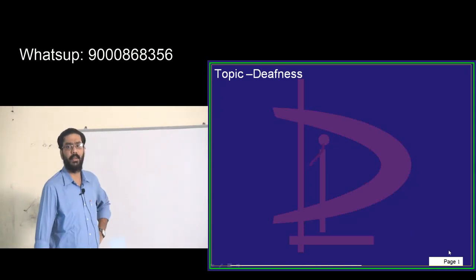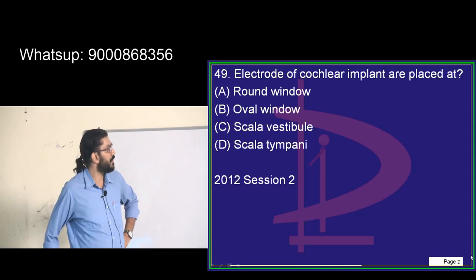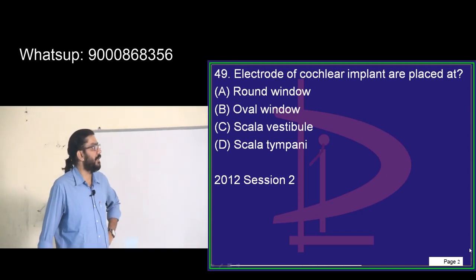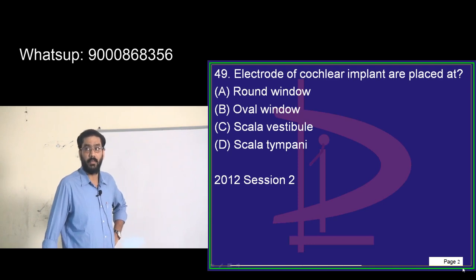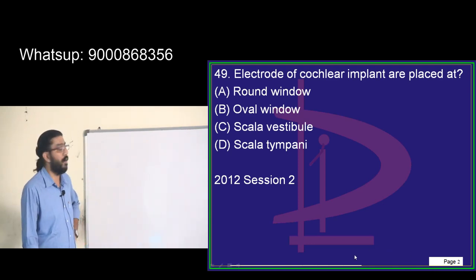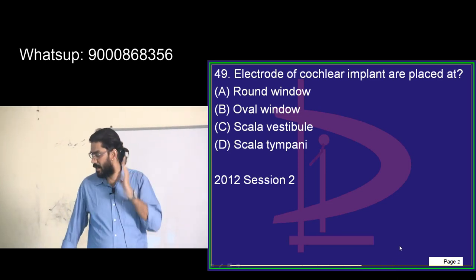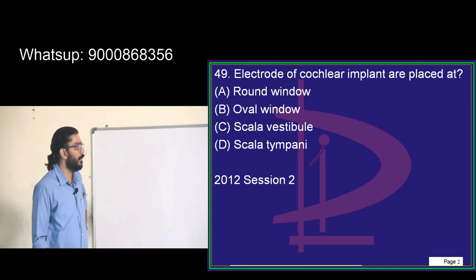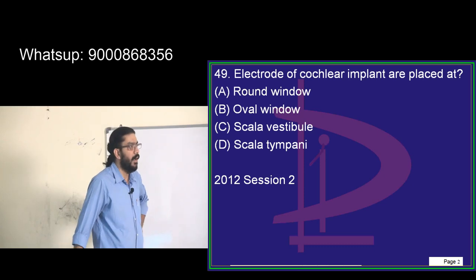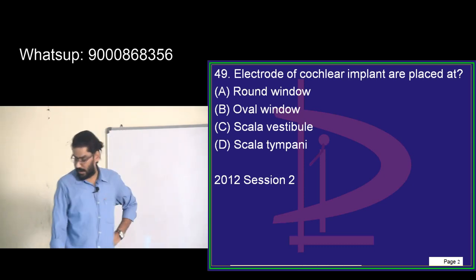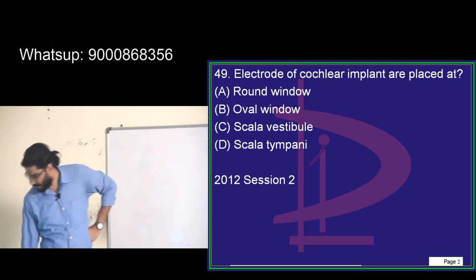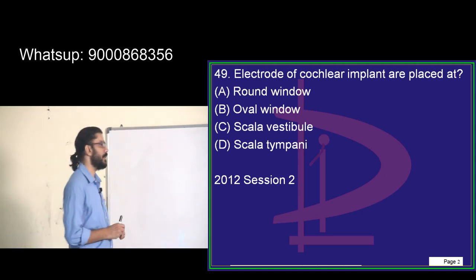Today we are dealing with deafness. A cochlear implant is a mechano-electromagnetic device. It has an external device and an internal device. The internal device is placed on the mastoid bone. The external device includes a microphone, speech processor, and transmitter.